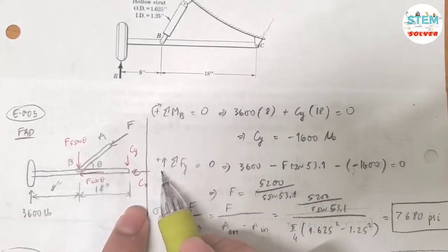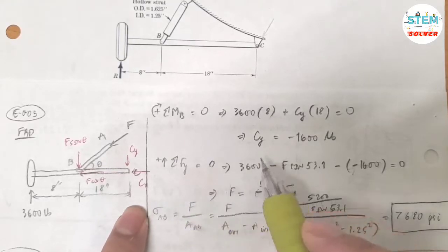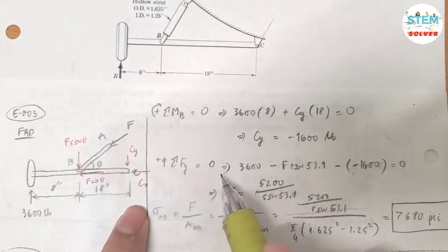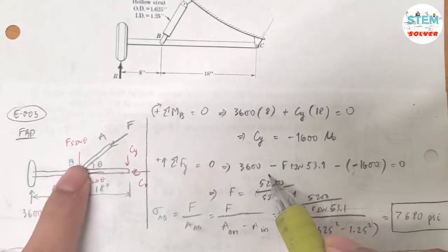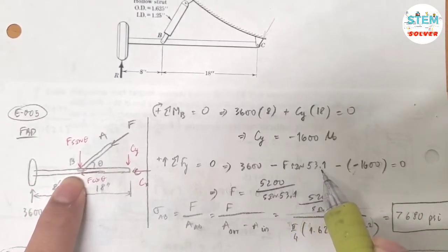So for now, take the summation about... take the summation of Fy. Because this is in equilibrium, the summation of Fy is equal to zero. So I have a positive 36,000 pounds as it's pointing upward, minus this downward force F sin 53.1...